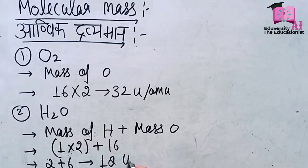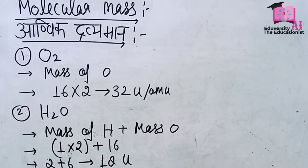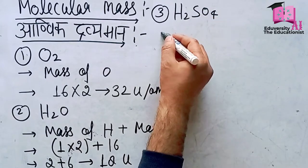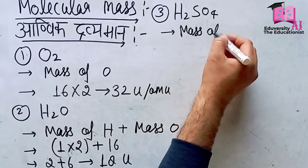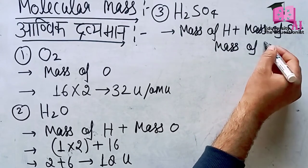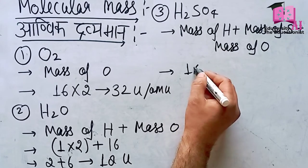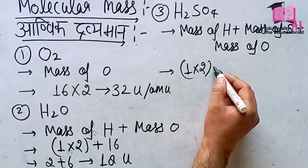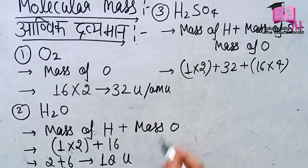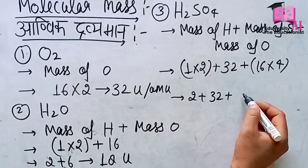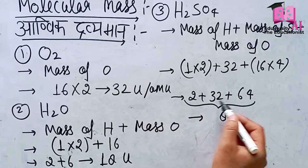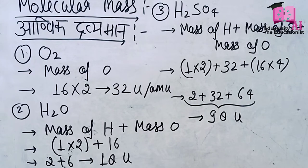Third example: H₂SO₄, sulfuric acid, king of chemicals. Three elements you can see: hydrogen, sulfur, and oxygen. Mass of hydrogen plus mass of sulfur plus mass of oxygen. Hydrogen has to be multiplied by 2, its atomic mass is 1, so 2 times 1 equals 2. Plus sulfur single atom 32, plus oxygen 4 atoms, so 4 times 16 equals 64. 2 plus 32 plus 64. This gives 98 unified AMU.